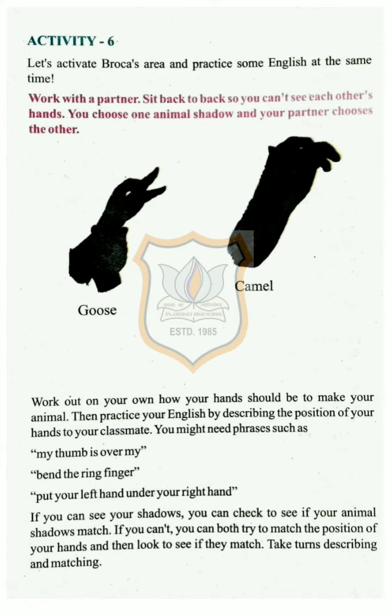Work with a partner, sit back to back so you can't see each other's hands. You choose one animal's shadow and your partner chooses the other. You can see the shadows of two animals — the one is a goose and the other one is a camel. Work out on your own how your hands should be to make your animal. Then practice your English by describing the position of your hands to your classmate.